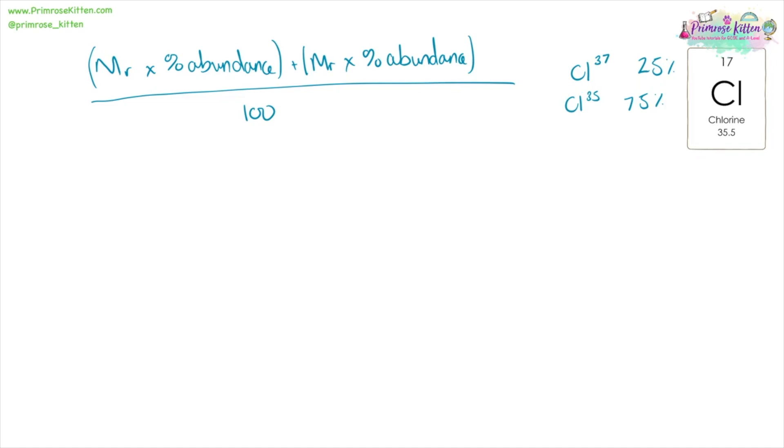To work out the mass, this is what we do. You take that MR, 37, times it by the relative abundance, 25%, do this for all of them, 35 times 75, and then divide that by 100. 37 times 25 is 925, plus 35 times 75, that's 2,625 over 100. That's 3,550 over 100, making 35.5.